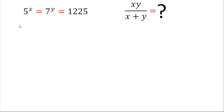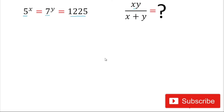Hello friends, welcome back again to my YouTube channel. Today in this video we are going to solve this interesting algebraic problem. The problem is: 5 power x equals 7 power y, and both equal 1225. We have to find the value of x times y divided by x plus y. Please subscribe to my channel and don't forget to give a thumbs up. Let's start.